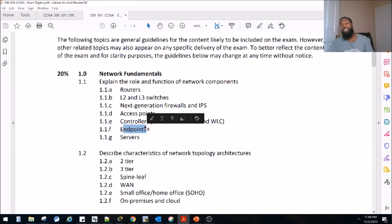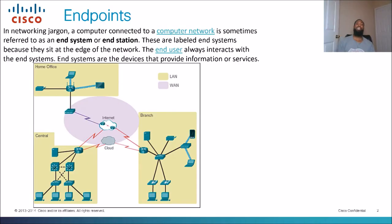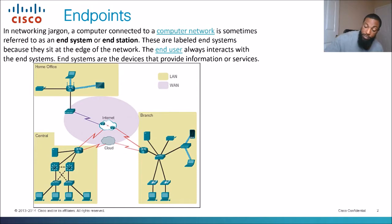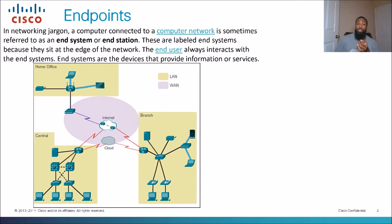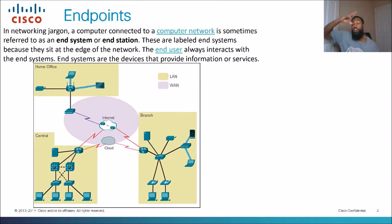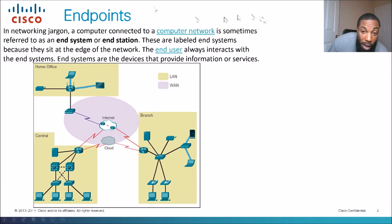Let's go ahead and take a look at the official definition. In networking jargon, a computer connected to a computer network is sometimes referred to as an end system or end station. They have a lot of synonyms for this — you can call it an endpoint, an end station, an end system, a host, a node, edge device, whatever you want to call it. But at the end of the day, they are called endpoints because they sit at the ends of the network. Looking at this diagram, we have a printer, a laptop, a tablet, and desktop PCs — they all sit at the edge of the network.